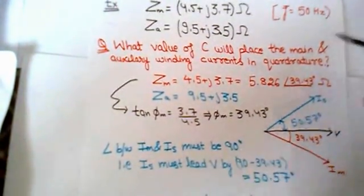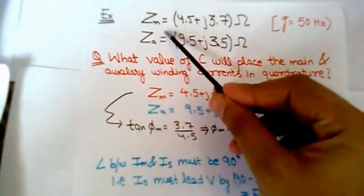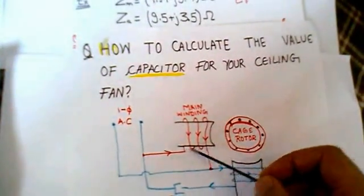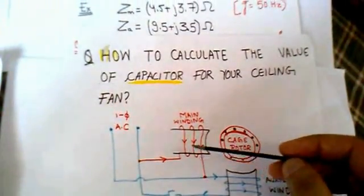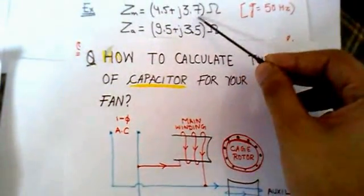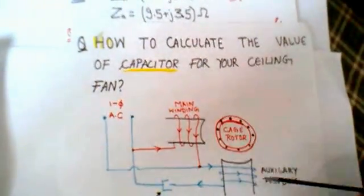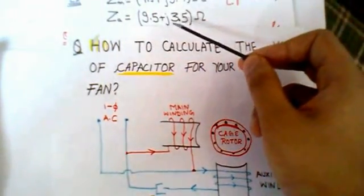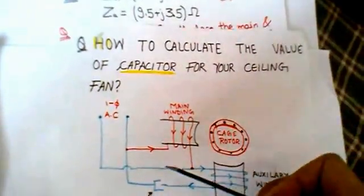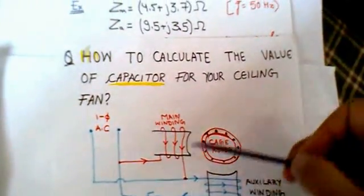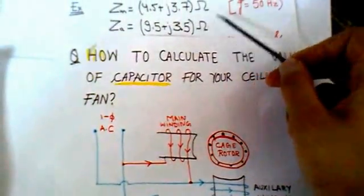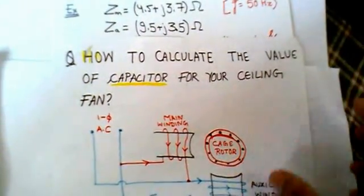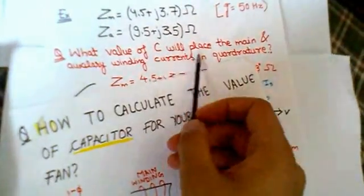How will we calculate the value of the capacitor? In this example, ZM — the resistance and inductance of the main winding — has already been given as 4.5 plus J3.7 ohms. And ZA has also been provided as 9.5 plus J3.5. Note that this ZA does not include the effect of the capacitor. The frequency is equal to 50 hertz. We are asked to calculate the value of the capacitor such that the current in the two windings will be in quadrature, that is the angle between the two windings must be 90 degrees apart.